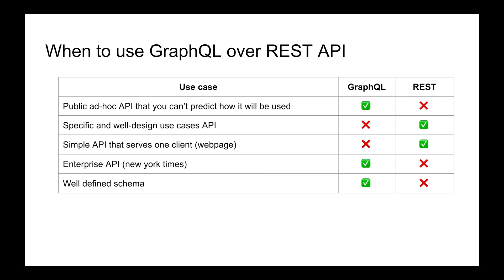If you're building an enterprise API for an organization with many departments, lots of interaction, and potentially a public API someday, and you're going to have a well-defined schema, then GraphQL is the way to go. However, one disadvantage of GraphQL is that if you expose your backend schema to the frontend, you give attackers another option to bring your database down — because they know the schema and how it works.